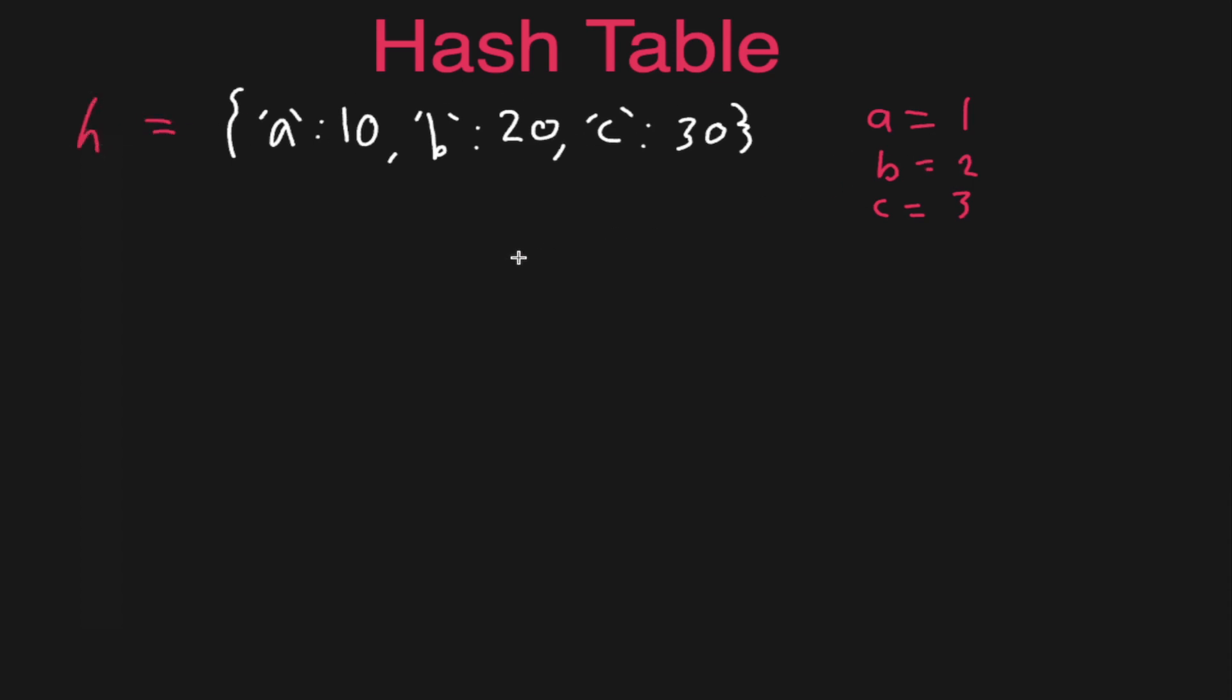Then when you do a lookup behind the scenes, you can imagine that it sort of works in a similar way as an array, where h of 1 corresponds to this key here and then it finds the 10.